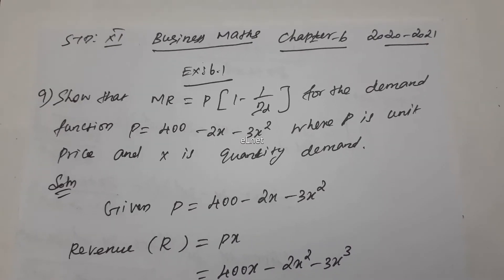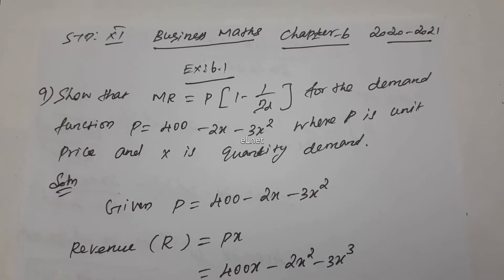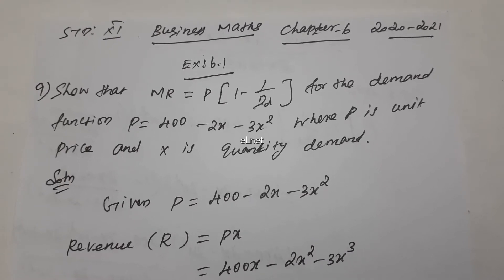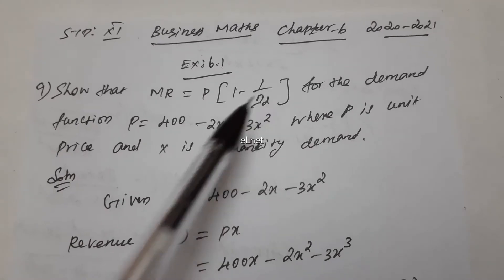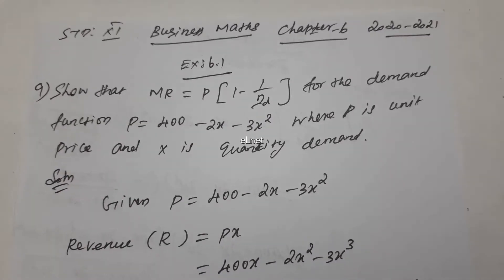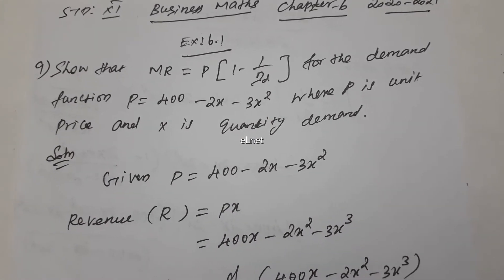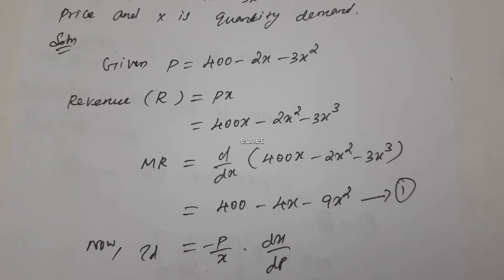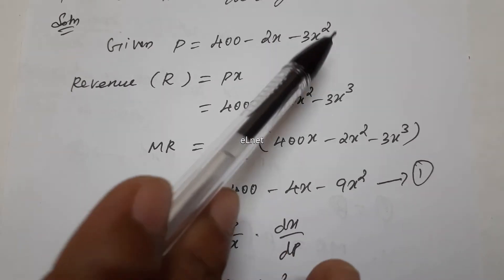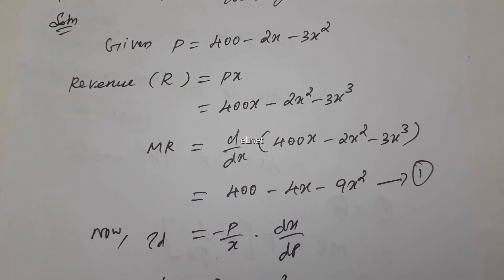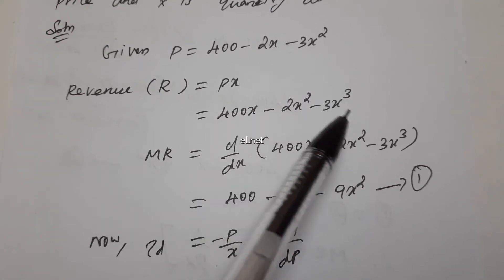Now, what we have done is eta D for demand and eta S for supply. So, P is equal to 400 minus 2x minus 3x squared. Revenue R is equal to P into x. So, multiplying P by x: 400x minus 2x squared minus 3x cubed.